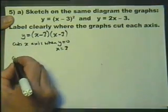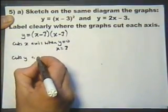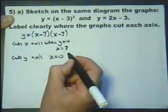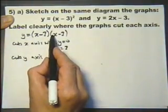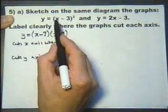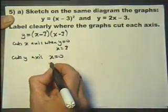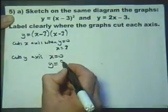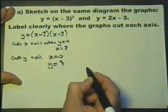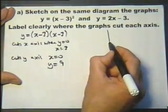Now let's see where it cuts the y-axis. And it cuts the y-axis when x equals 0. So if you put x equals 0 into there, and x equals 0 into there, you get minus 3 times minus 3. Or x equals 0 into there, and you get minus 3 squared, which is plus 9. So that will tell me that it is a parabola up this way. So let's sketch the graph.